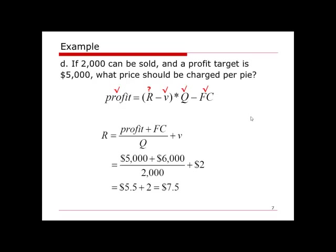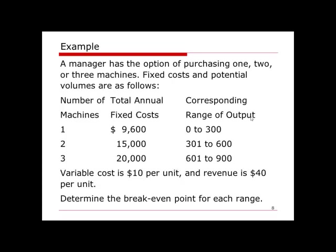The next example: a manager has the option of purchasing one, two, or three machines. The fixed costs and potential production volumes are given. With one machine we can produce 300 units, two machines gives 600 units, and three machines can produce up to 900 units. The variable cost is ten dollars per unit and the revenue is forty dollars per unit.